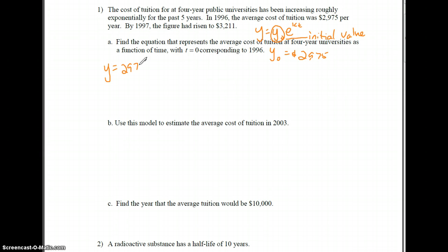We're going to have y equals 2,975 e to the kt. I need to solve for k, I can't leave k all by itself. I'm going to use the fact that I know at t equals 1, which was 1997, one year after 1996, we have this amount. So 3,211 equals 2,975 e to the k times 1. I'm going to divide both sides by 2,975, and then I have 3,211 over 2,975 equals e to the k. How do I solve this? I need to take the ln. So k equals ln of 3,211 over 2,975.